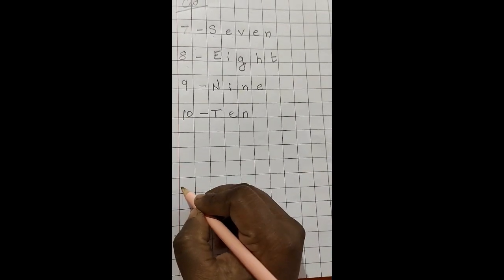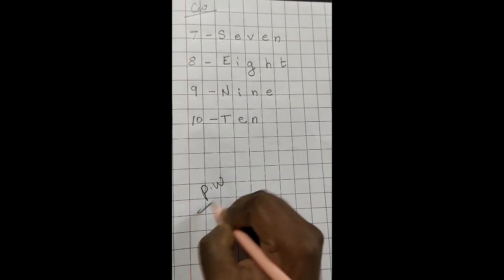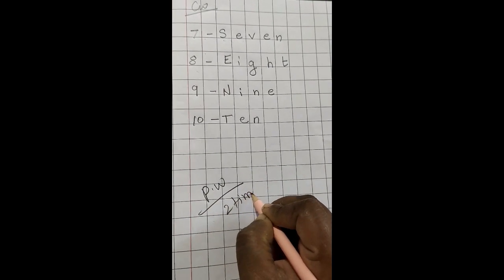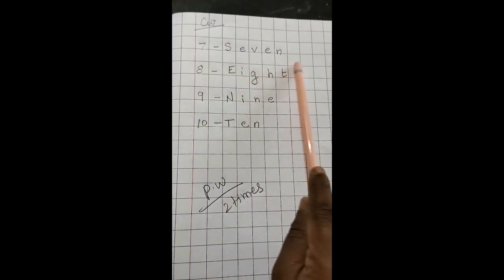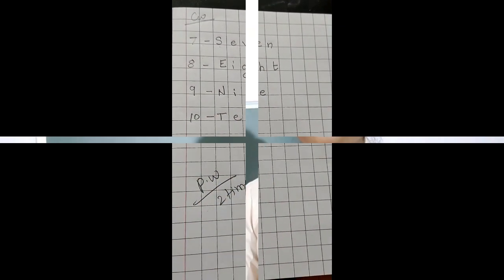In your practice work, repeat the same spelling two times — practice work two times: the spellings of seven, eight, nine, and ten. My dear kids, finish all the practice work and classwork and send it to me so that I can know you are writing at your home. Learn well and practice all the number names and numbers at home.